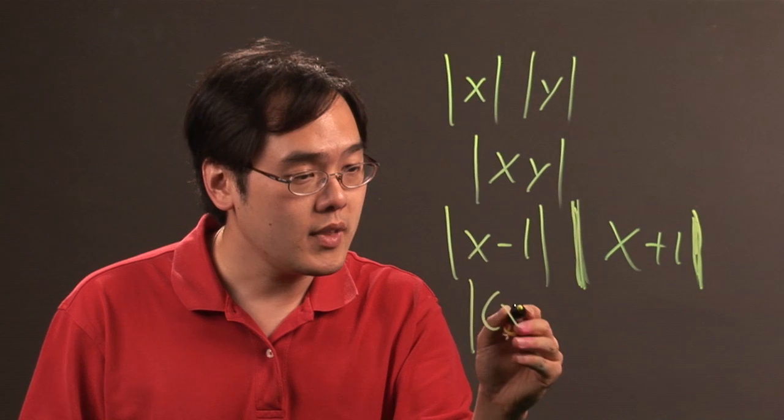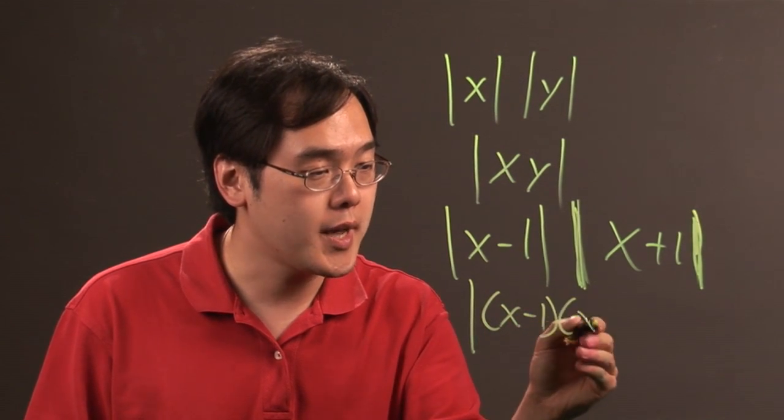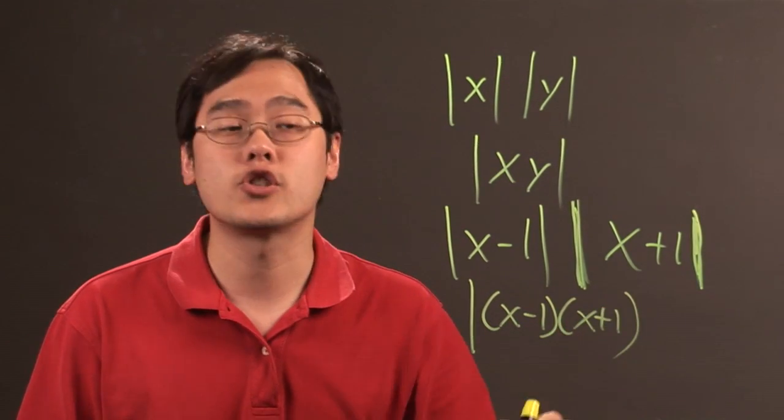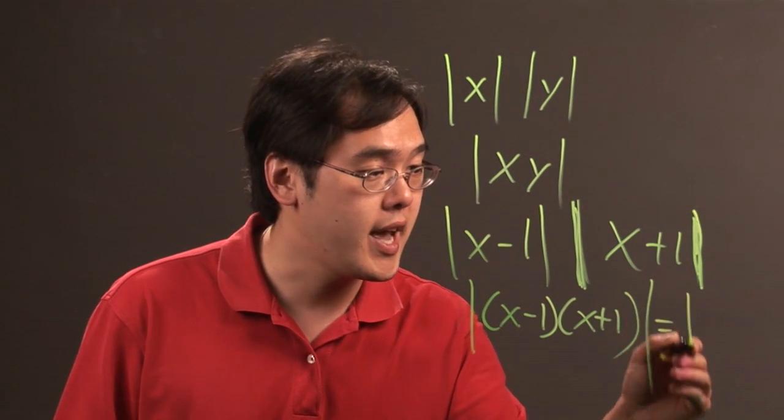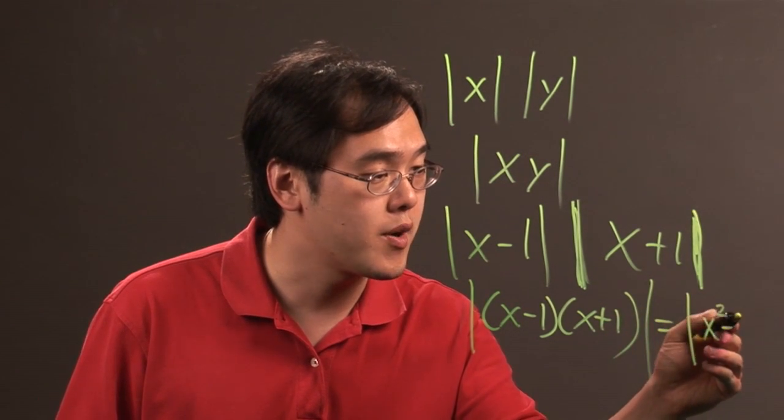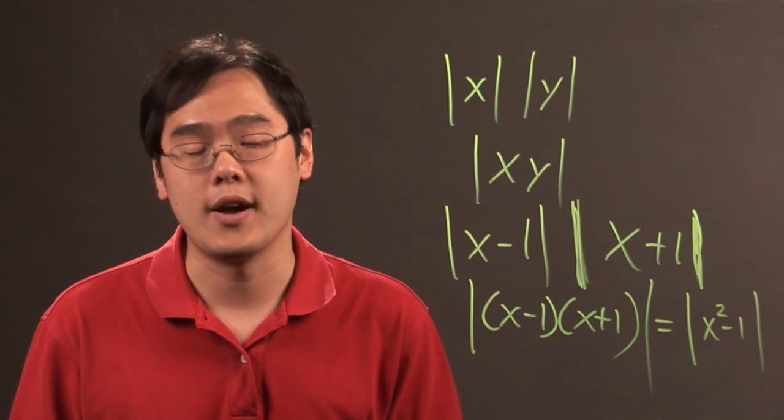All you're doing is the absolute value of x minus 1 times x plus 1 on the inside, and you're still going to be left with a positive result. All you need to do then is figure out how to FOIL, and at the end of the day you have the absolute value of x squared minus 1.